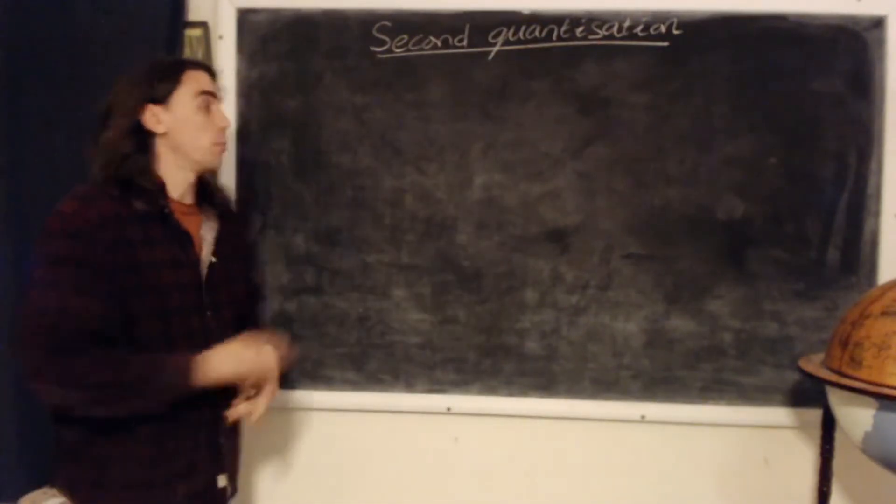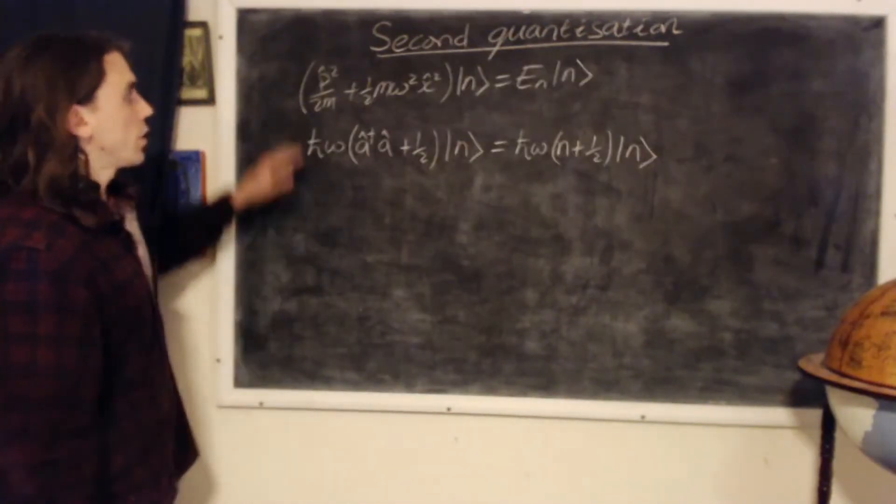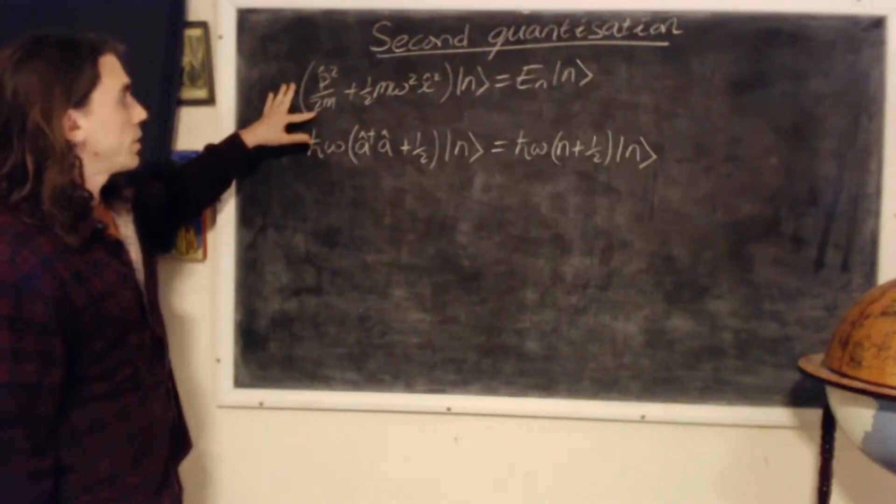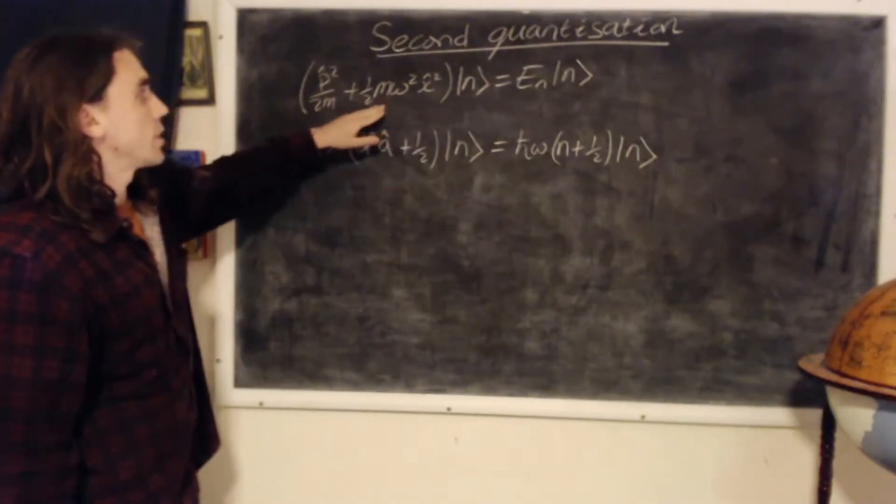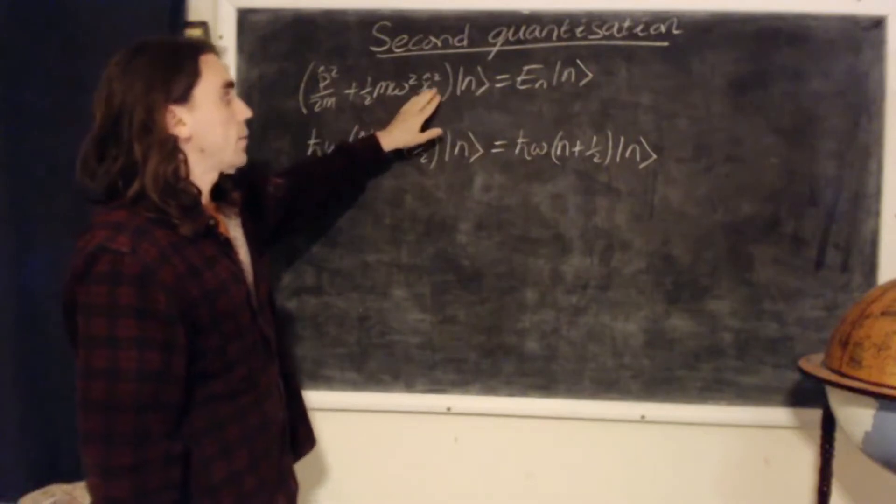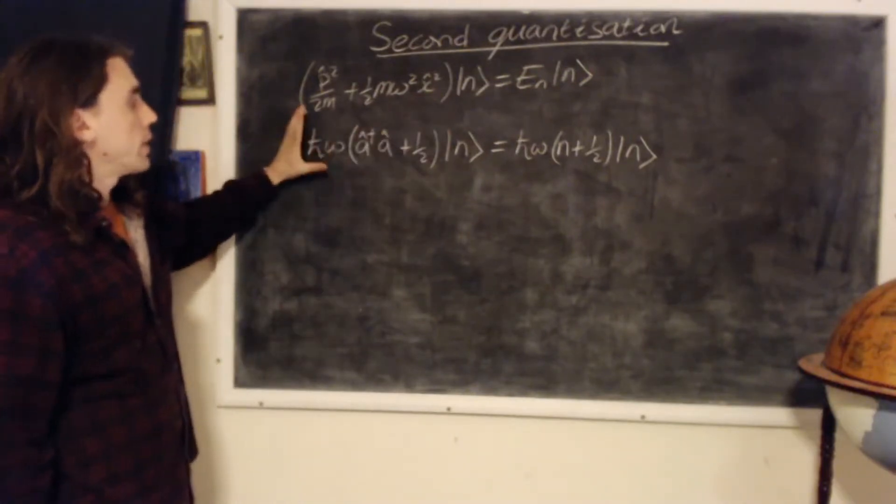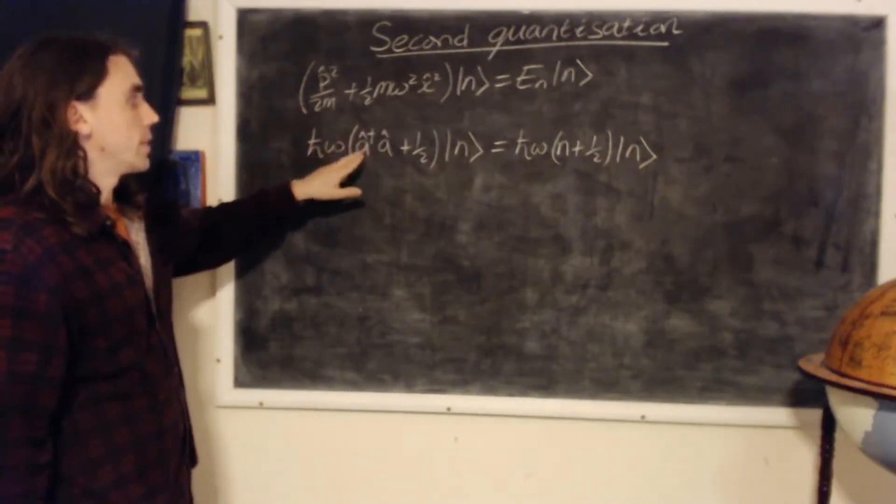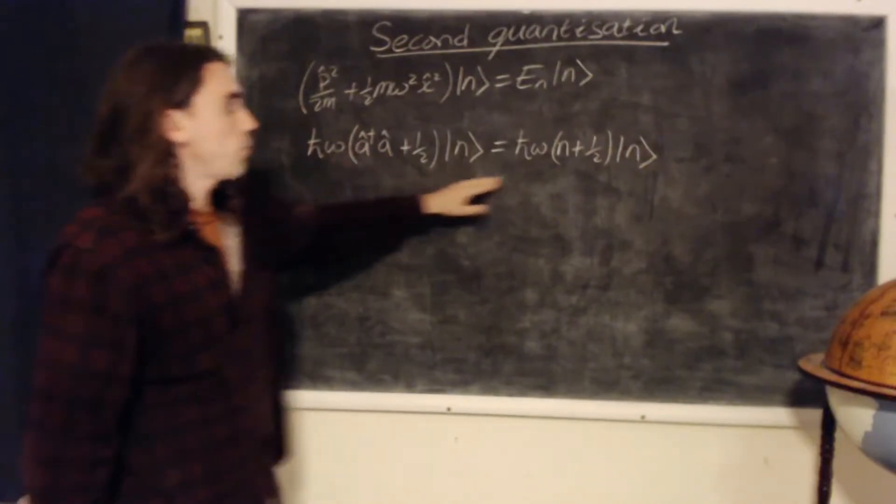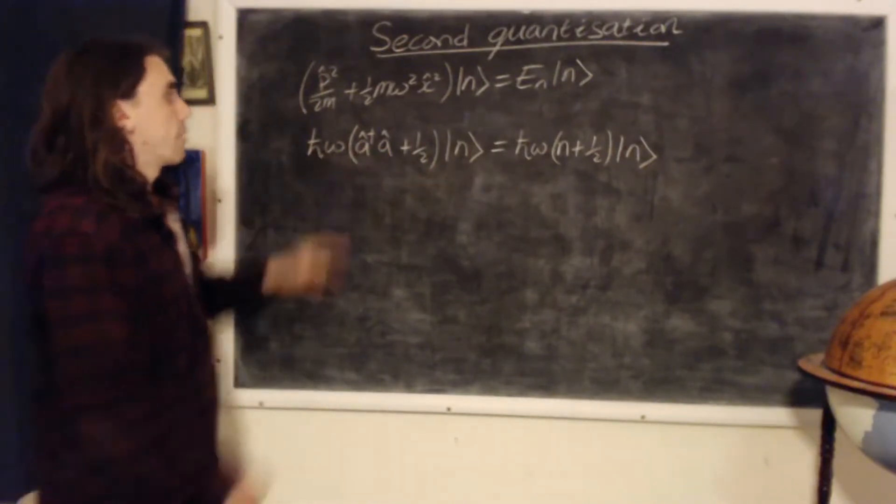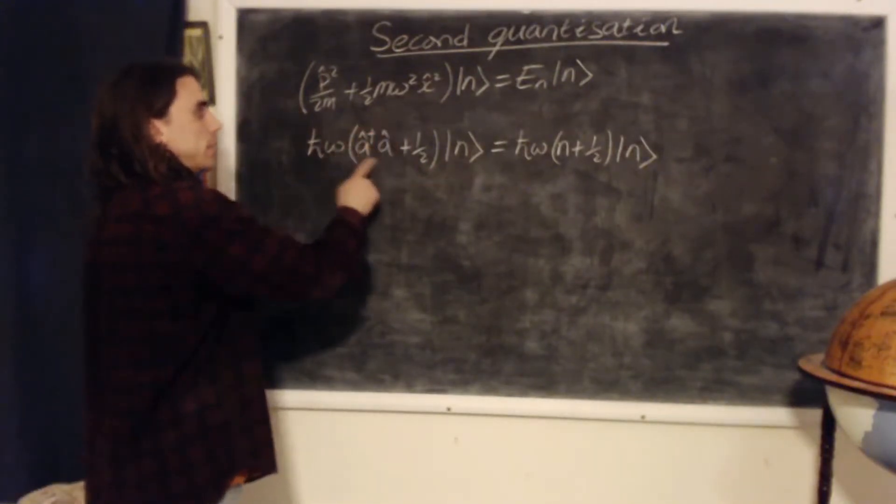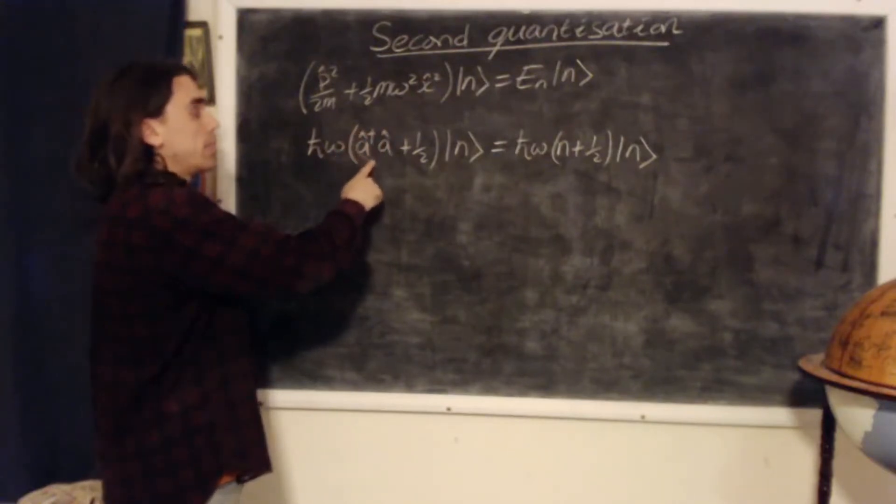So let's remind ourselves of the problem. The time-independent Schrödinger equation reads as follows. Our potential is just half m omega squared x squared. And we can rewrite it in terms of raising and lowering operators a dagger and a in the following form, where a dagger a here is naturally interpreted as an operator n.